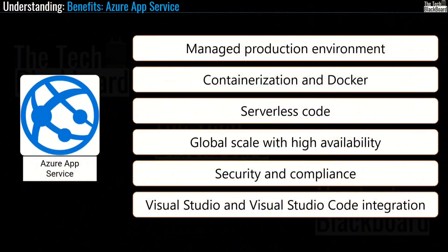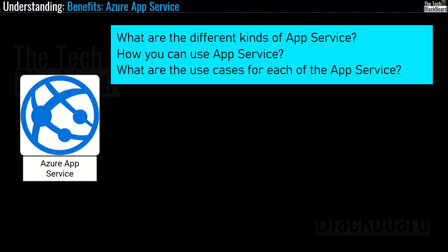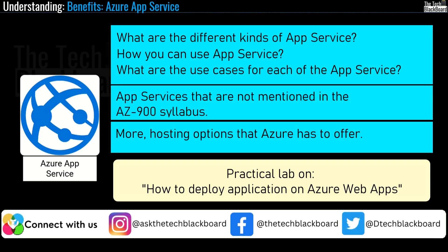Hopefully you now have a fair idea on Azure App Service. There is so much more to cover, so in the next episode I will tell you about the different kinds of Azure App Service, how you can use them, and the different use cases for each. I will also tell you about a couple more Azure App Services that are not mentioned in the AZ-900 syllabus but are worth learning as they are heavily used in the cloud industry. Additionally, I will tell you some more Azure hosting options so you can understand how much more Azure has to offer.